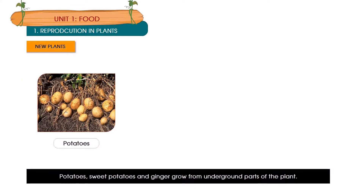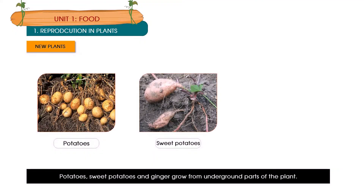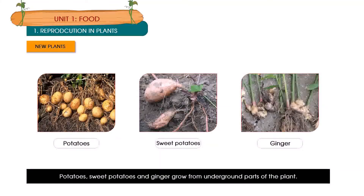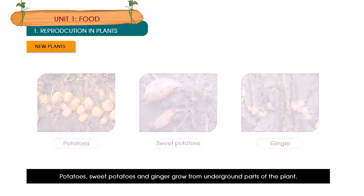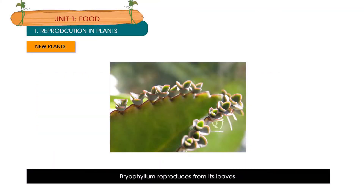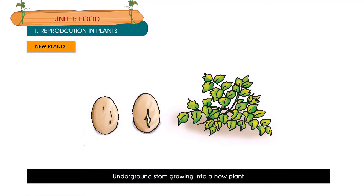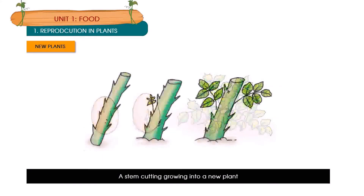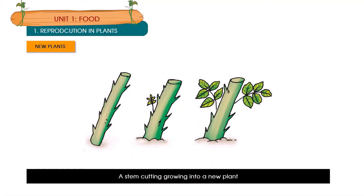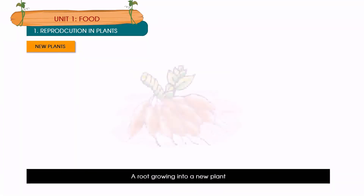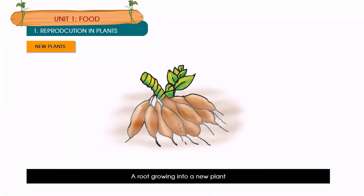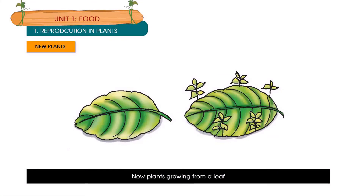Potatoes, sweet potatoes and ginger grow from underground parts of the plant. Bryophyllum reproduces from its leaves. Examples of vegetative reproduction include an underground stem growing into a new plant, a stem cutting growing into a new plant, a root growing into a new plant, and new plants growing from a leaf.